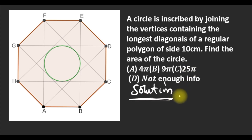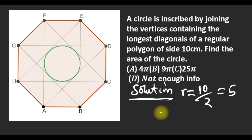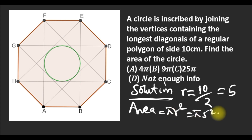You'll be wondering how. The radius of any circle formed by joining the longest diagonals, as shown, is for a regular octagon. The radius is always half of the side of the polygon — the regular octagon. It must be an octagon. So the radius is 10 over 2, which is 5. So our area is π r squared, which is π × 5 squared = 25π.